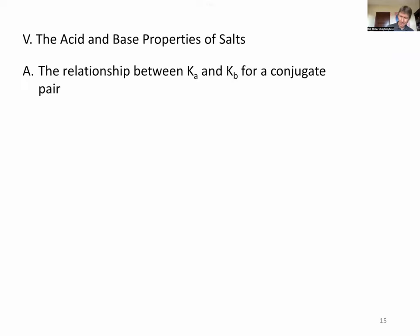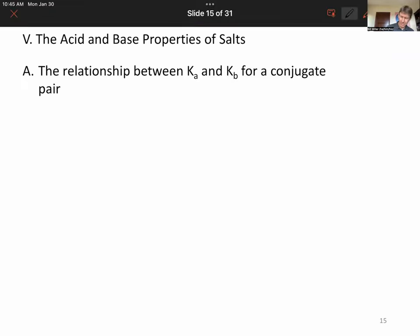And we'll start by talking about the relationship between Ka and KB for a conjugate pair. Our example in this case is going to be acetic acid acetate. But we could have picked anything. And we know the Ka value of acetic acid. It's 1.8 times 10 to the minus 5.